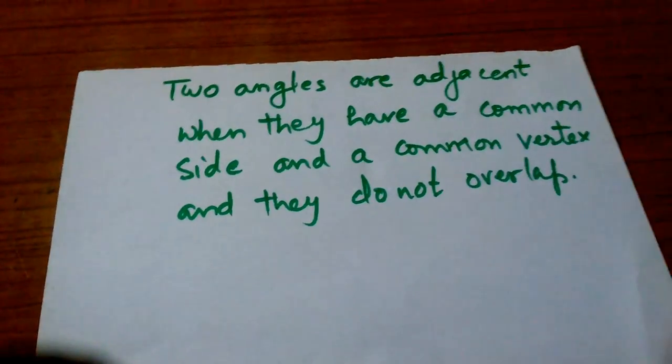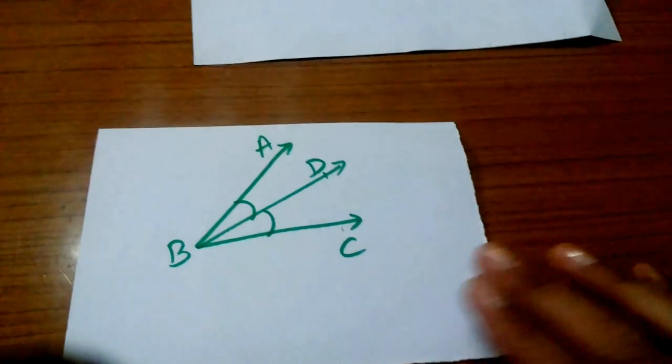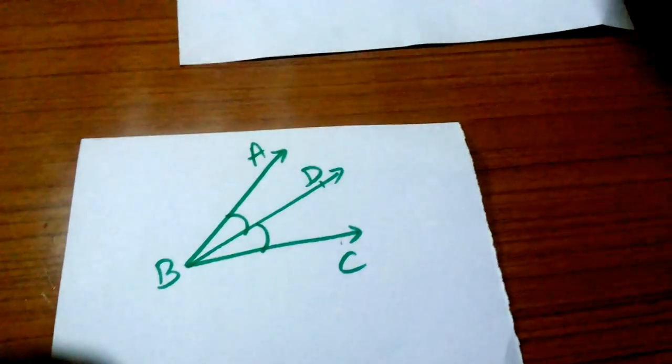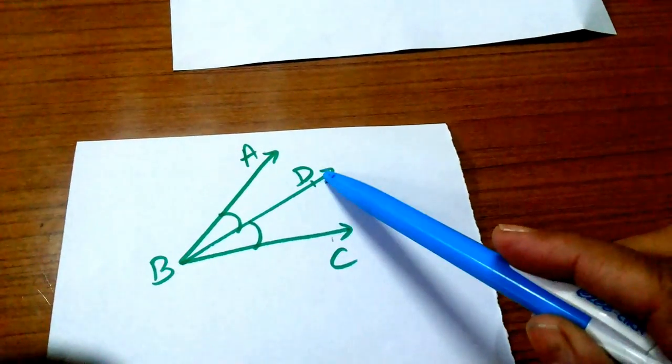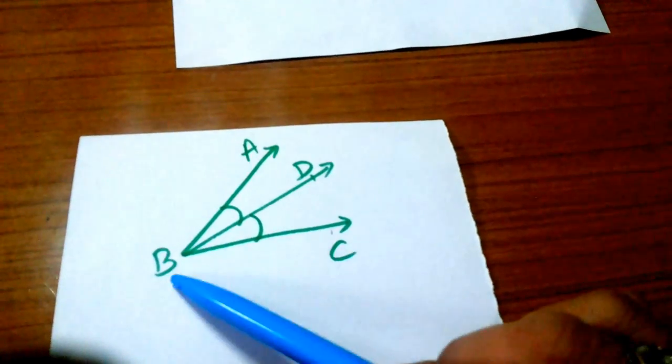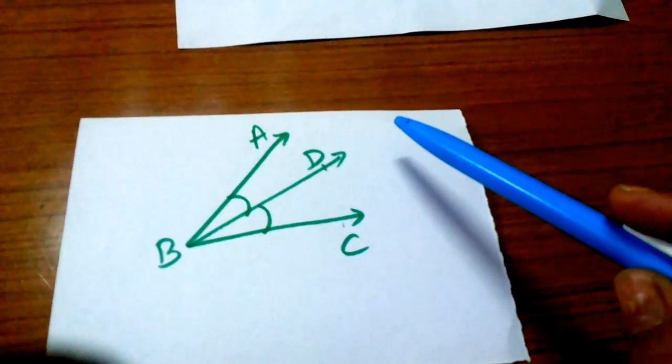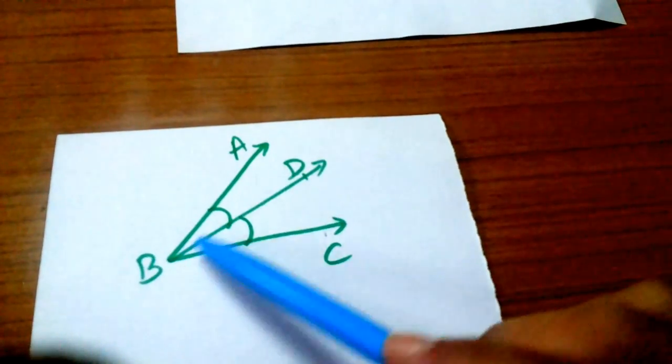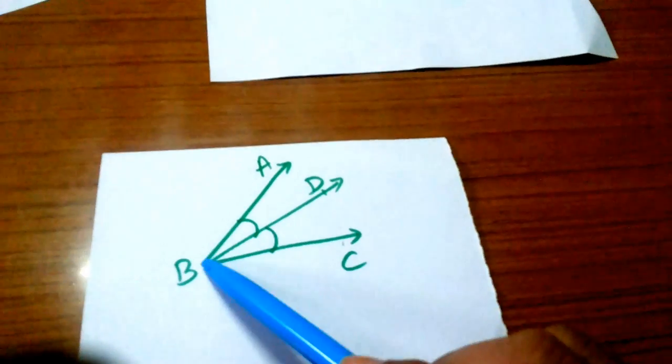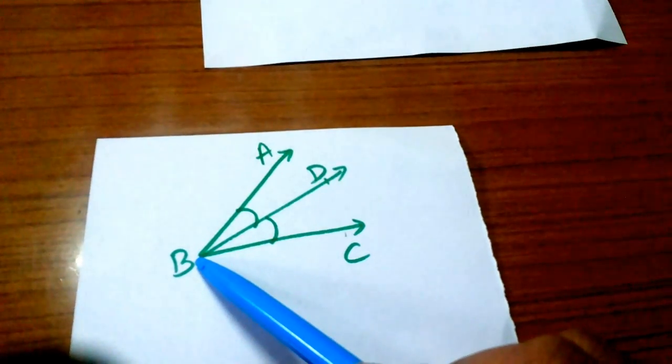Let us understand this by an example. In this diagram, angle ABD and angle CBD are adjacent angles because they have a common arm BD and a common vertex B.